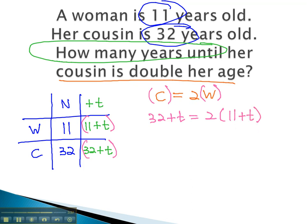This gives us an equation we can quickly solve, first by distributing the 2. 32 plus t equals 22 plus 2t. Moving the variable to one side, we subtract t from both. This gives 32 equals 22 plus t.